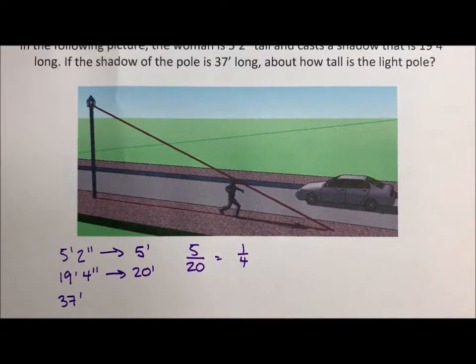Ratios of height to shadow is the same whether you're a person, a pole, a car, a cat, or whatever. That ratio is the same for anyone and everything. So if we know the ratio of this person to her shadow, we can figure out the height of the pole.